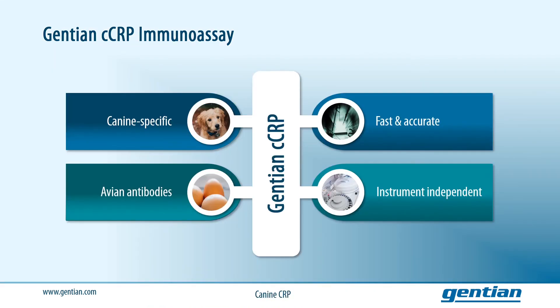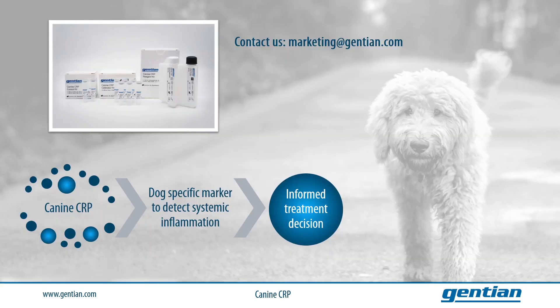To wrap up this short introduction to the Gentian canine CRP assay, Gentian uses canine-specific avian antibodies in this fast and accurate assay that can be applied to any open access clinical analyzer at your laboratory. With the Gentian canine CRP immunoassay, you will acquire a highly reliable and sensitive dog-specific marker for systemic inflammation, which will guide the veterinarian to an informed treatment decision and thereby improve patient outcome. You can contact us for any questions regarding the canine CRP assay via email or visit our website for more information.